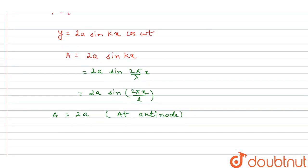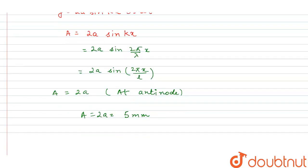As it is given in the question, the value of 2A is equal to 5 mm.